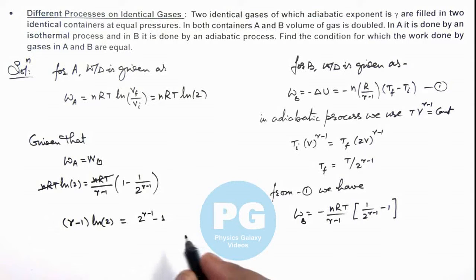Or further we can simplify it as (gamma-1) ln(2) is equal to 1 minus 2^(1-gamma).